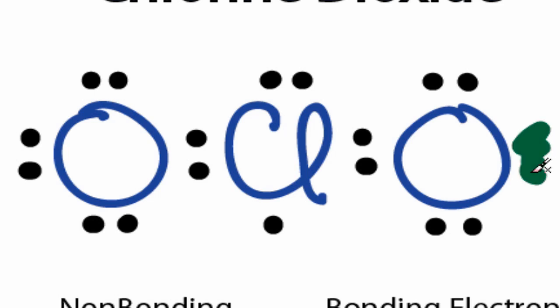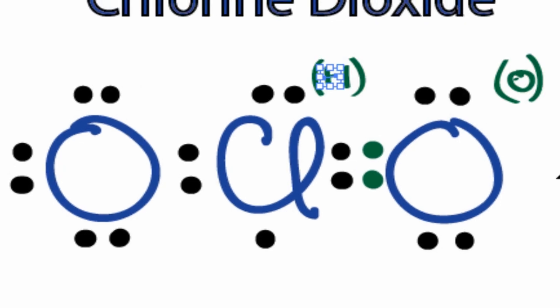I know that I can take two valence electrons from the oxygen and share them with the chlorine to form a double bond, and that will reduce the formal charge on the oxygen and the chlorine. So, now, we have a formal charge of zero on this oxygen, where it was negative 1, and the chlorine's a plus 1. So, we're pretty close.